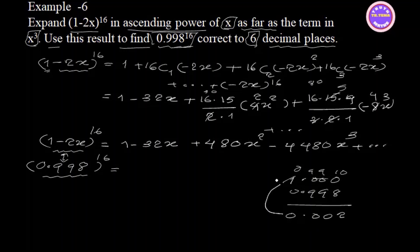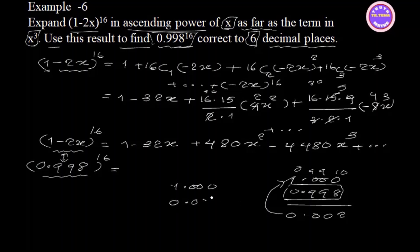So 2x equals 0.002, which means x equals 0.001. And 1 minus 2x equals 0.998.